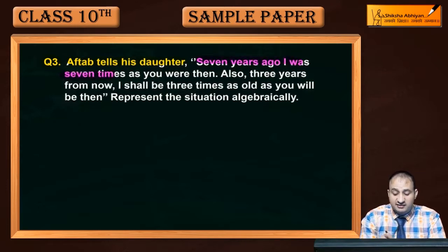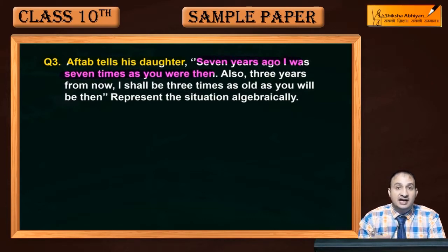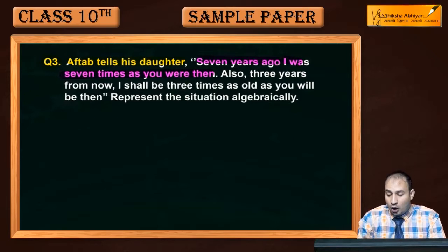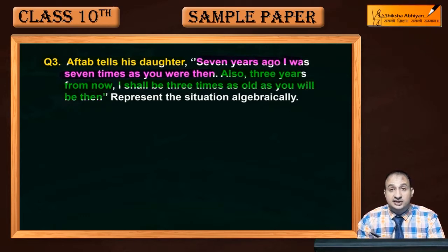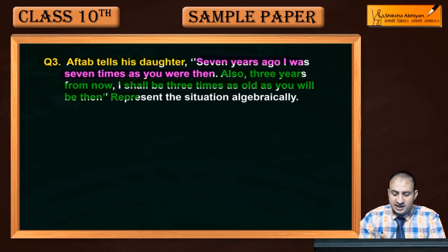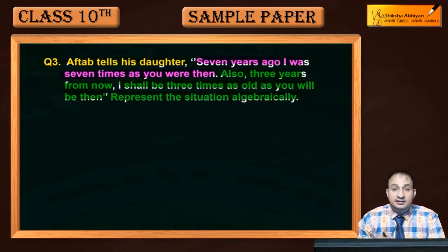Seven years ago, I was seven times as old as you were then — मैं तुम्हारी age का seven times था। यह age seven years ago की बताई जा रही है, दोनों Aftaab की भी और daughter की भी। Also, three years from now, I shall be three times as old as you will be then — मैं तुमसे three times ज़्यादा हूँगा। तीन साल बाद की age represent करनी है। इस situation को algebraically represent करना है।